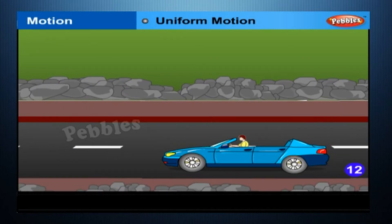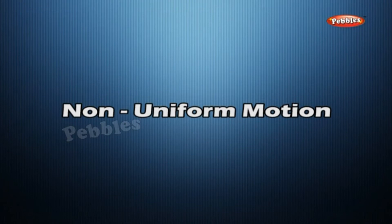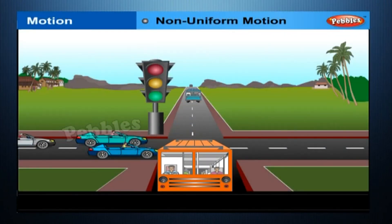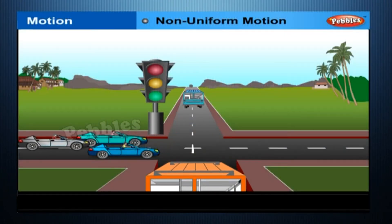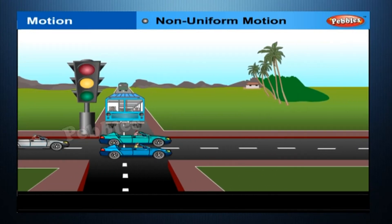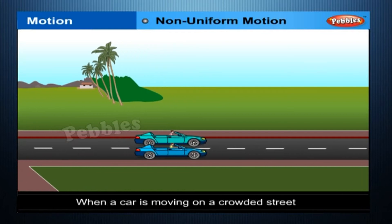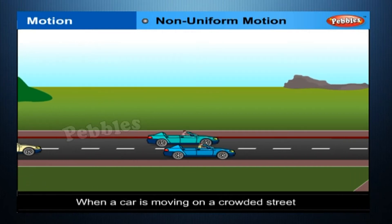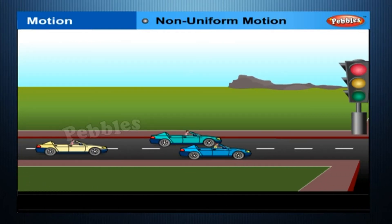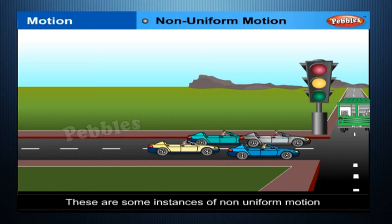The time interval in this motion should be small. Non-Uniform Motion. In our day-to-day life, we come across motions where objects cover unequal distances in equal intervals of time — for example, when a car is moving on a crowded street or a person is jogging in a park. These are some instances of non-uniform motion.